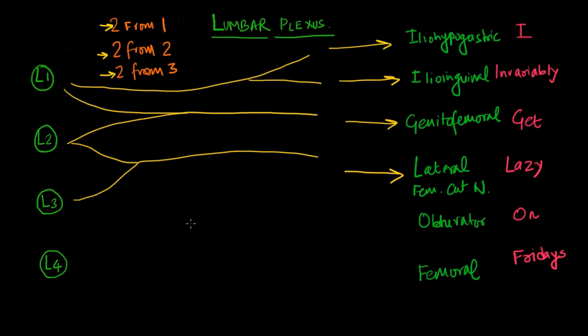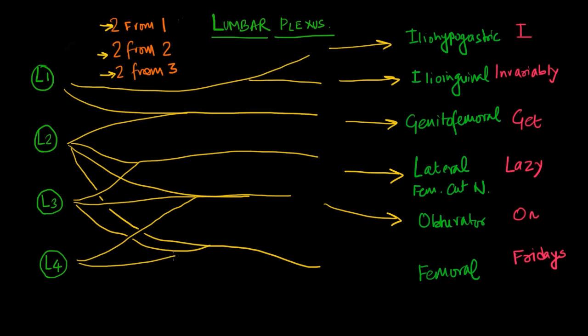And the last double is from three nerve roots so L2, L3, and L4 combine to give origin to the obturator nerve. And again branches from L2, L3, and L4 combine to give origin to the femoral nerve.